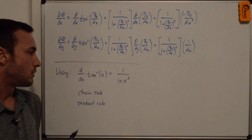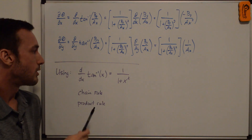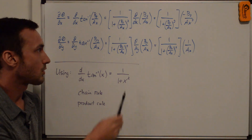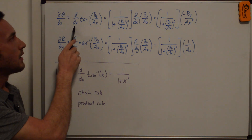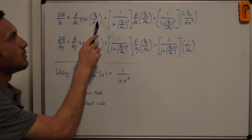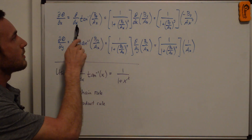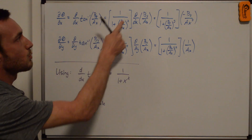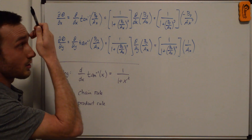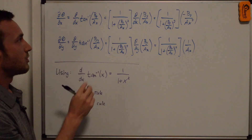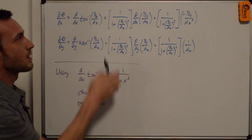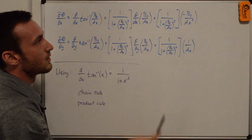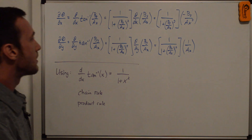We evaluate those derivatives using the chain rule and the familiar derivative: d/dx of arctan(x) equals 1 over (1 plus x squared). So d(theta)/dx equals the partial derivative with respect to x of arctan(b_y / a_x). Taking the arctan derivative first gives 1 over (1 plus (b_y / a_x) squared), then by the chain rule we multiply by d/dx of (b_y / a_x), which equals negative b_y over a_x squared. We do the same for d(theta)/dy.